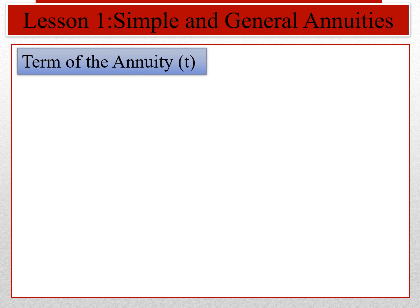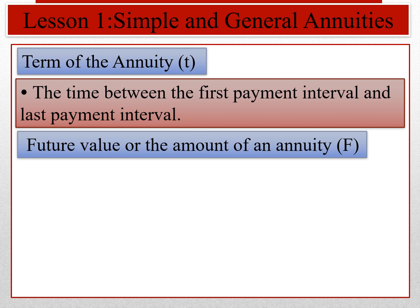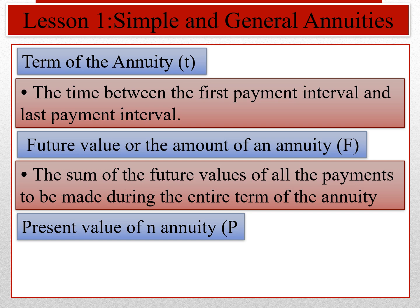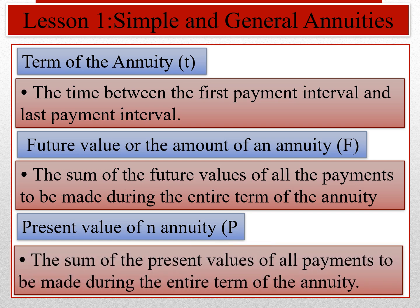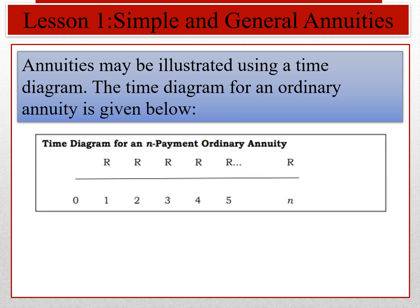Term of annuity is the time between the first payment interval and the last payment interval. Future value, or the amount of annuity, is the sum of the future values of all payments to be made during the entire term of the annuity. Present value of annuity is the sum of the present values of all payments to be made during the entire term of the annuity. Annuities may be illustrated using a time diagram. The time diagram for an ordinary annuity is given below.